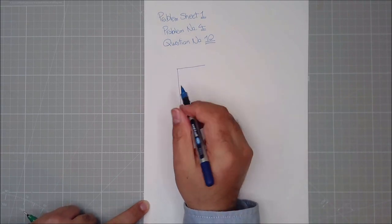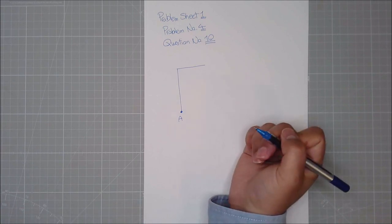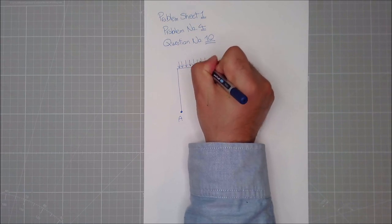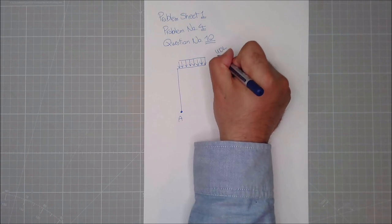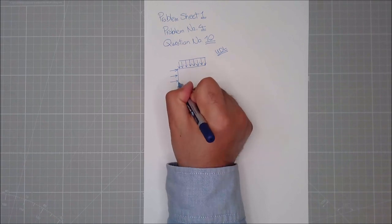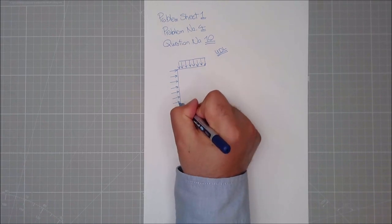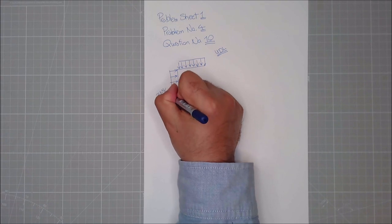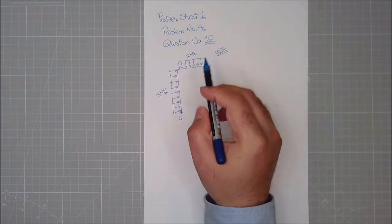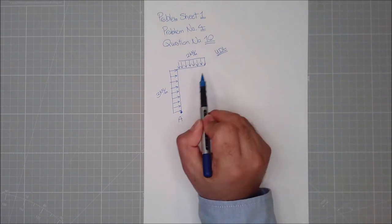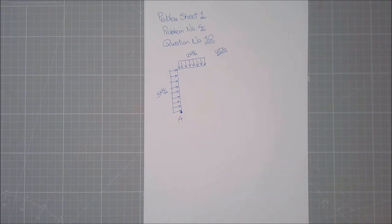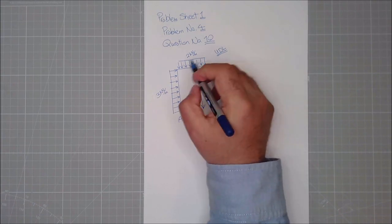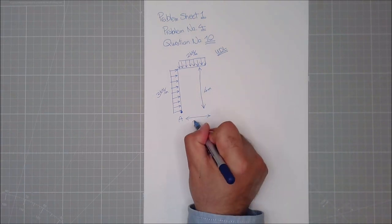The structure shows a point A — this is half a frame. The lines you see are uniformly distributed loads. We have values of 3 kilonewtons per meter and 2 kilonewtons per meter. Because they are uniformly distributed loads, they have a measurement per meter. So I need to know that this distance is 4 meters and this length is 1.5 meters.